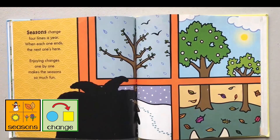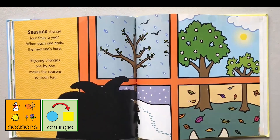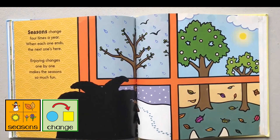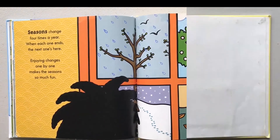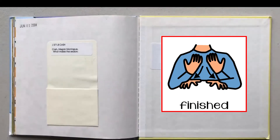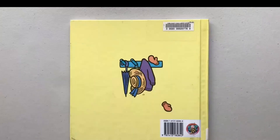Seasons change four times a year. When each one ends, the next one's here. Enjoying changes one by one makes the seasons so much fun. Spring, summer, autumn, and winter. The end.